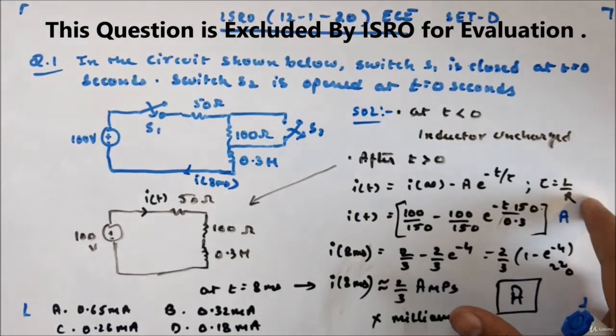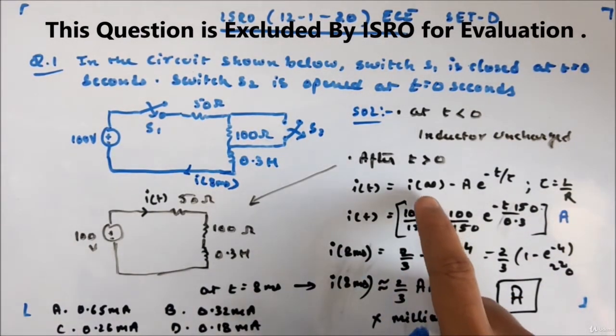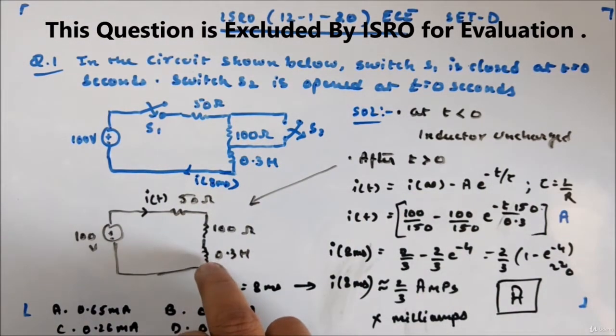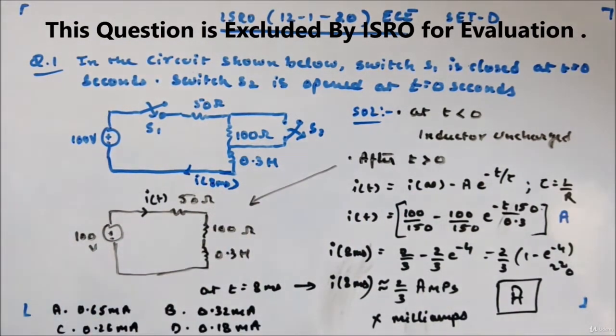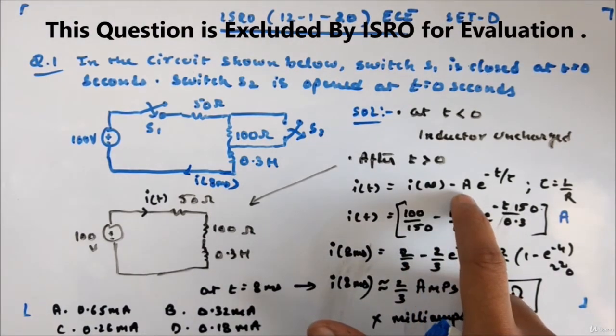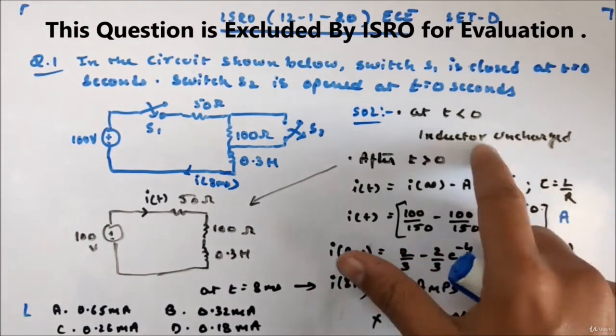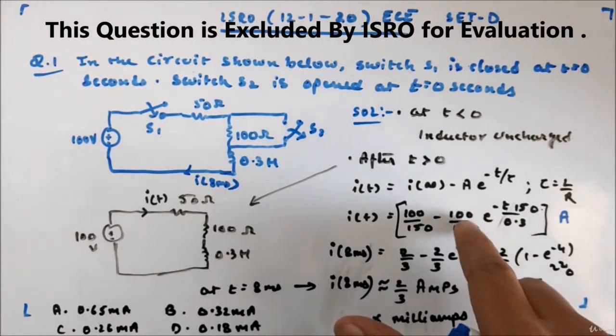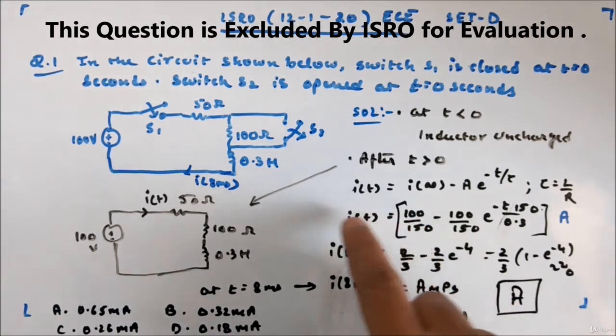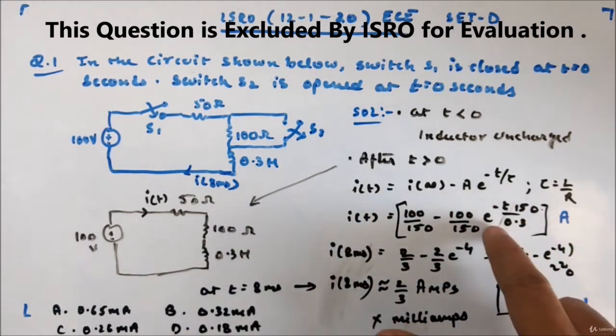L is 0.3, R is 150. Now i infinity will be, since at infinity this inductor will be short, so 100 divided by 150. A is constant, but since inductor was uncharged before, the value of A will be same as i infinity, so this is 100 divided by 150.